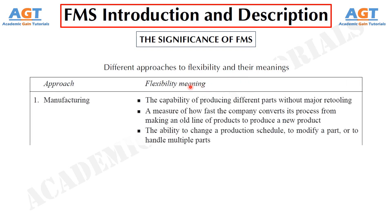From the manufacturing point of view, flexibility is the capability of producing different parts without major retooling. It is a measure of how fast the company converts its process from making an old line of products to produce a new product. In other words, manufacturing looks at flexibility as the ability to change a production schedule, to modify a part, or to handle multiple parts.